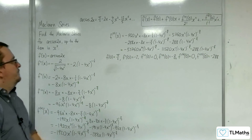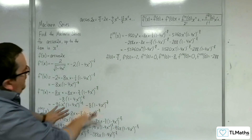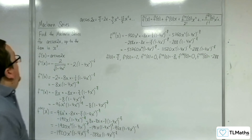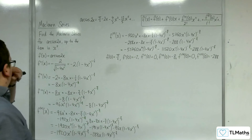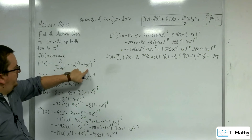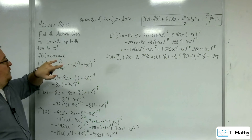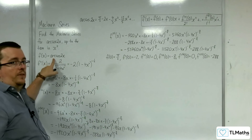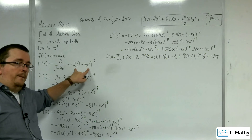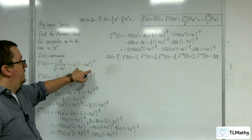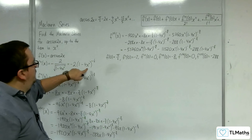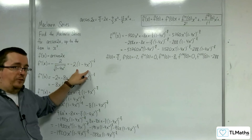That was really long-winded and loads of room for error. So how else could you have done this? Well, you know that f(x) differentiates to the first derivative expression, so that must integrate back to f(x). If we could find the expansion of the derivative and then integrate the expansion, we should be able to arrive at the expansion for f(x). We can find that expansion using binomial expansion.